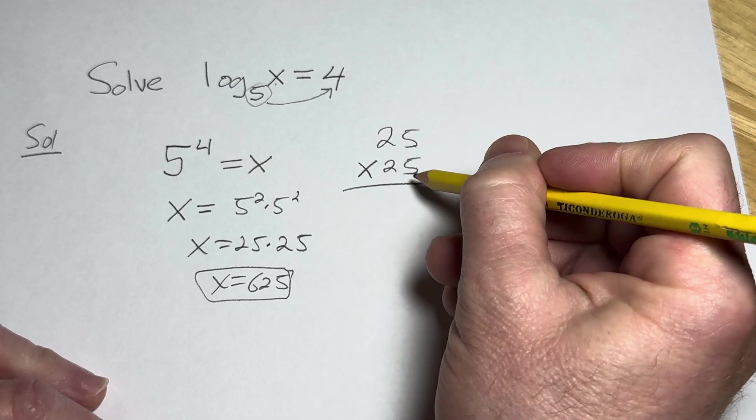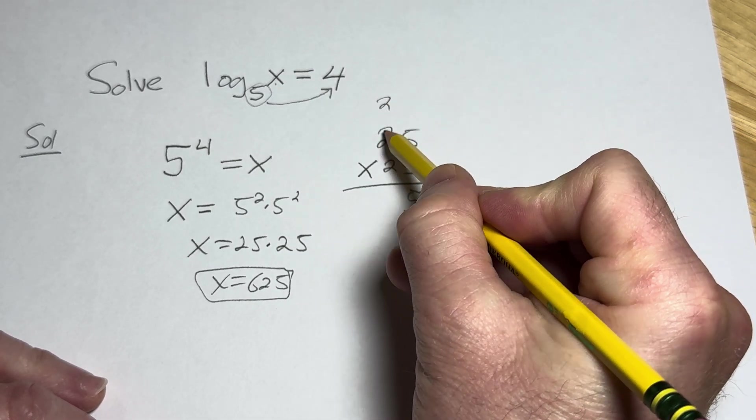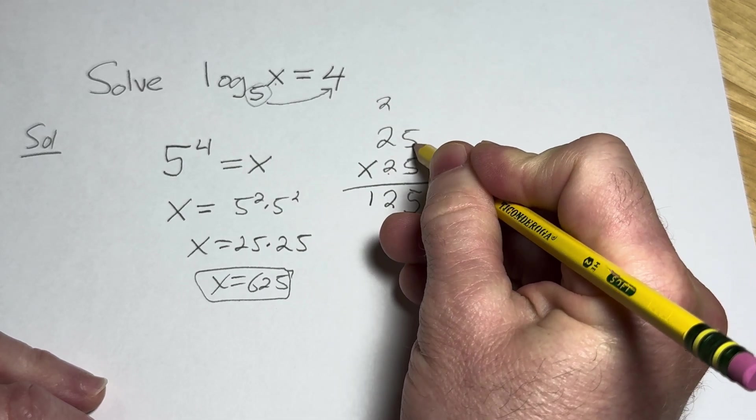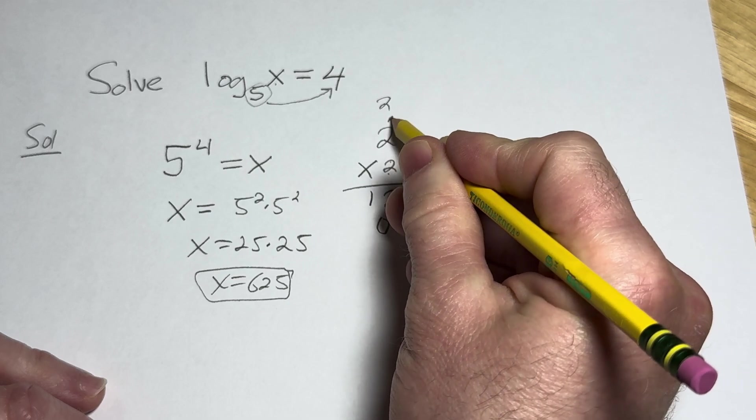5 times 5 is 25, carry the 2. 5 times 2 is 10, plus 2 is 12. 2 times 5 is 10, carry the 1. 2 times 2 is 4, plus 1 is 5.